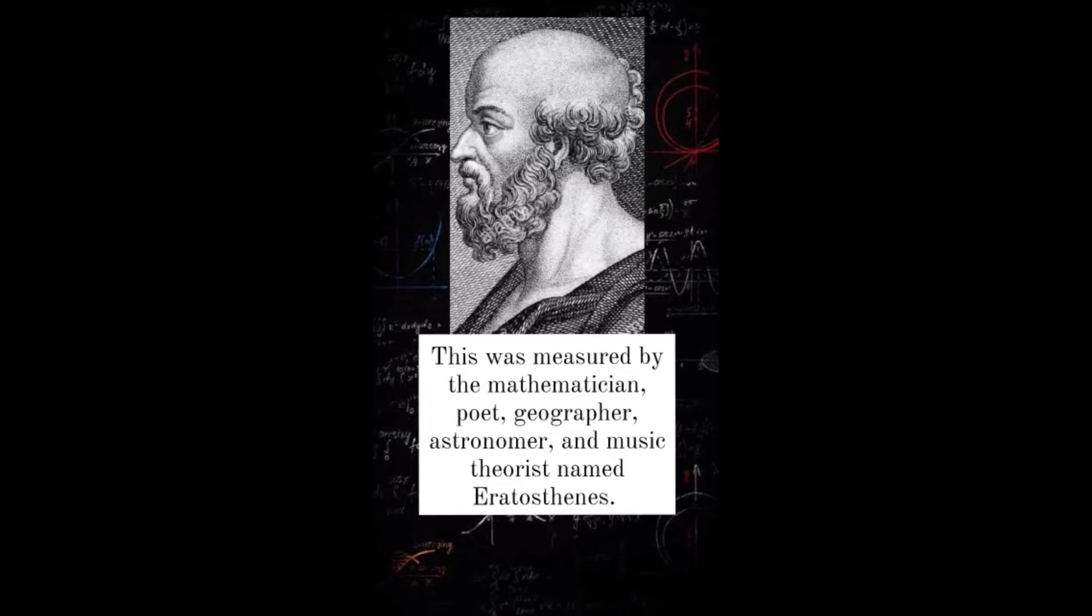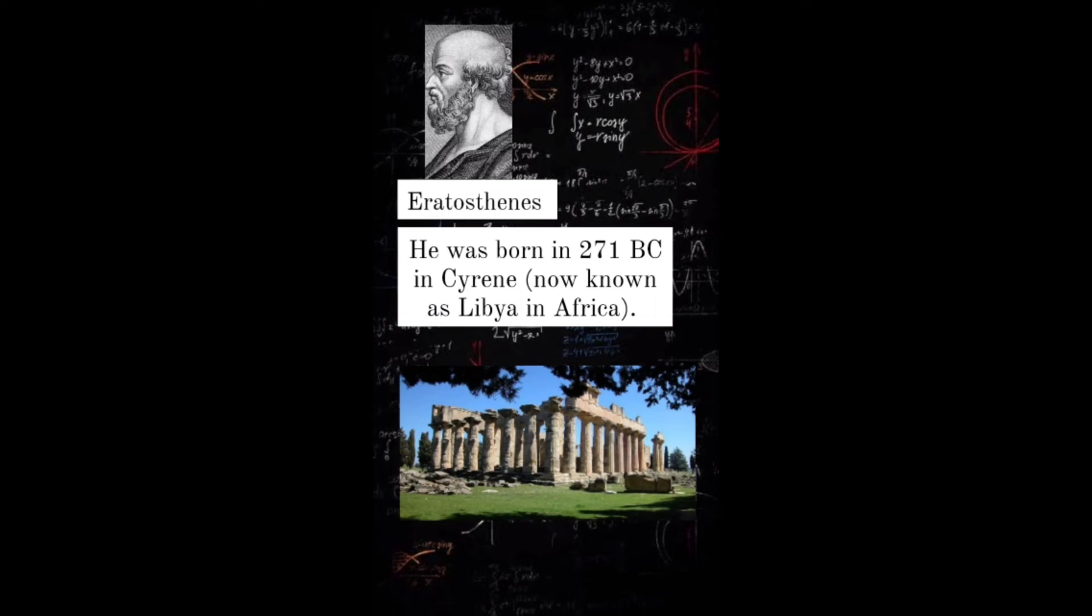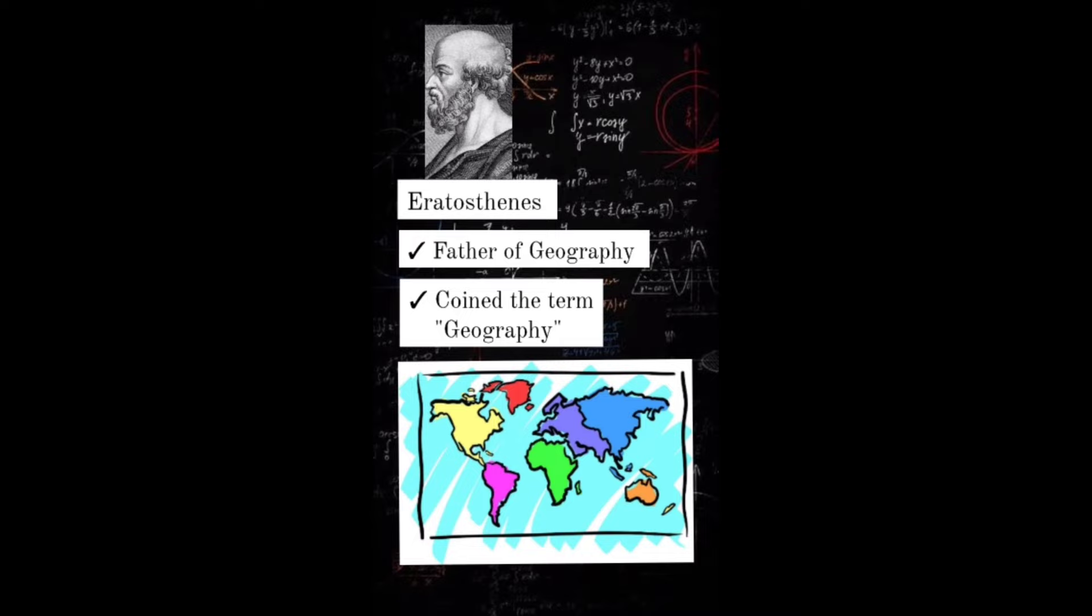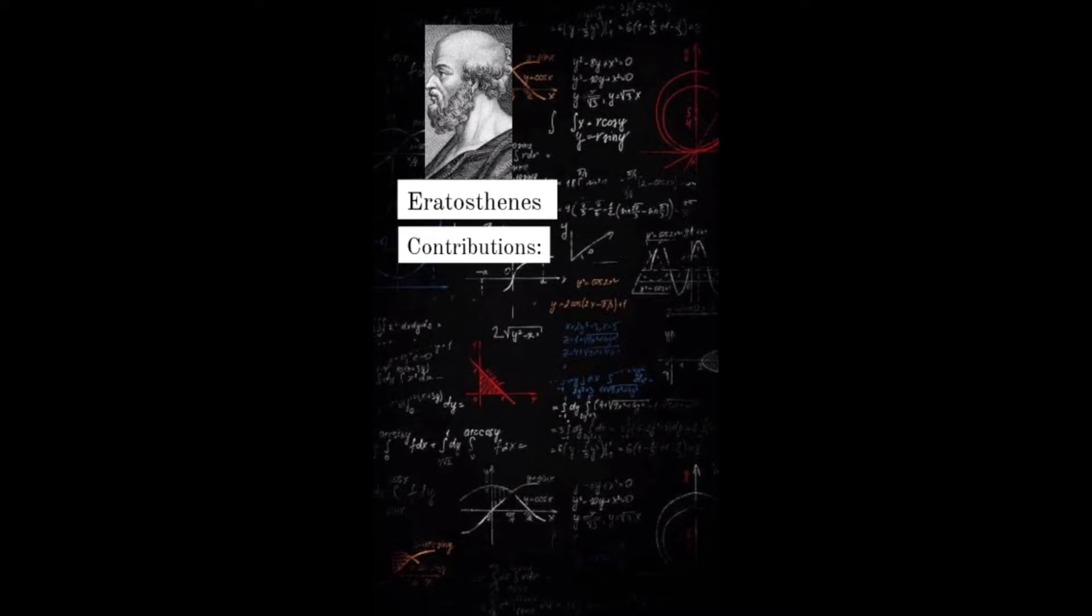He was born in 271 BC in Cyrene, now known as Libya in Africa. He studied at Plato's school in Athens. He was the chief librarian of the Great Library of Alexandria. He was the father of geography and the first to coin the term geography.